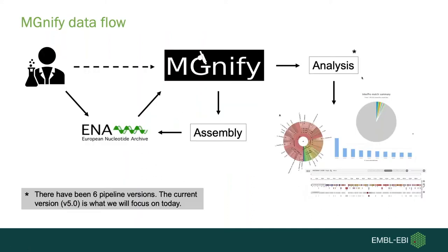This is how the MGnify data flow works. We start with you as the user who takes the sample and does the sequencing in your lab. You can then request analysis from MGnify, but there is also a middleman — ENA, the European Nucleotide Archive — where all raw data needs to be deposited first before we inherit it in MGnify and analyze it.